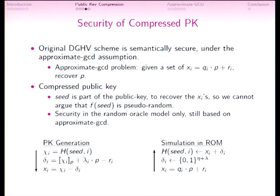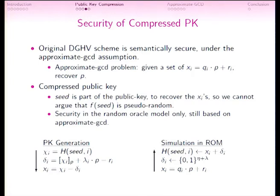In the proof, in the random oracle model, we proceed in the other direction: we start with XI given by the approximate GCD instance, compute an arbitrary correction delta_i, and program the random oracle to output XI + delta_i, so that subtracting delta_i gives XI, which is small modulo P. It is easy to show that these elements have statistically close distributions, meaning the simulation is almost perfect. We can use the XI from the approximate GCD instance to generate the public key, and the proof proceeds exactly as in the original DGHV scheme.